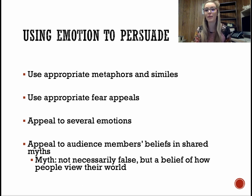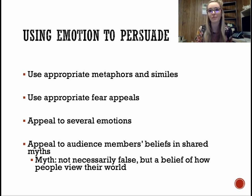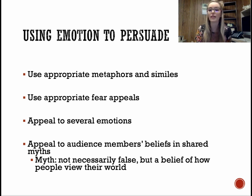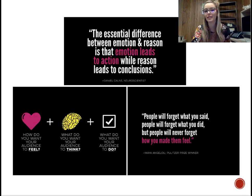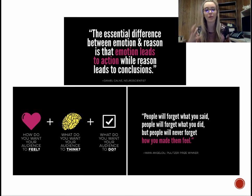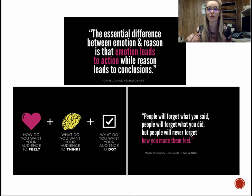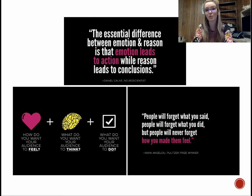Using emotion to persuade — going back to pathos. You might use metaphors and similes, appropriate fear appeals with negative motivation, or appeal to several different emotions like in the God Made a Farmer video. You might appeal to audience members' beliefs and shared myths — a myth is not necessarily false but a belief of how people may view their world. How are people currently viewing your topic? Do you want them to shift to a new viewpoint? The essential difference between emotion and reason is that emotion leads to action, while reason leads to conclusions. People will forget what you said, people will forget what you did, but people will never forget how you make them feel. We're relying on both pathos and logos while always establishing ethos — that credibility. Now we're going to move into talking about organizational patterns for our persuasive assignments.